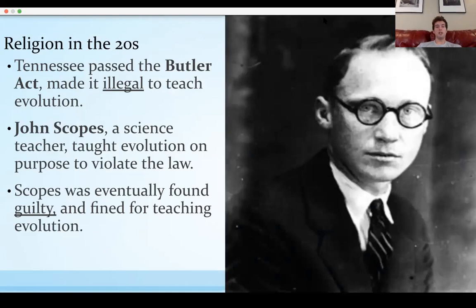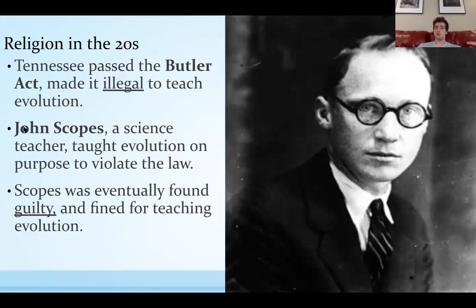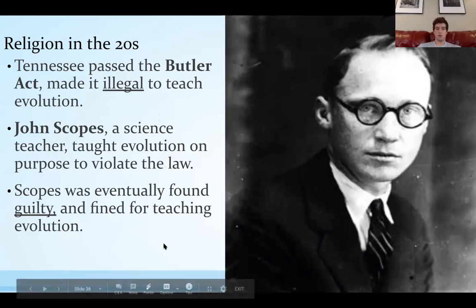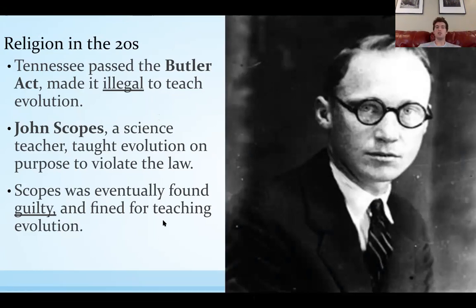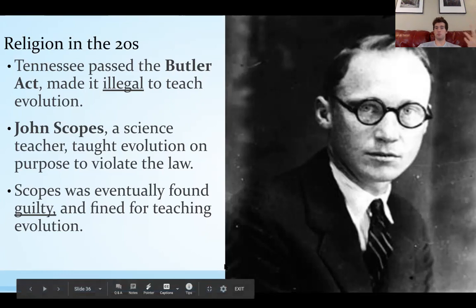There are some things we should talk about regarding religion in the 20s. One big thing was the Butler Act, which made it illegal to teach evolution. Traditionalist values said you can't teach evolution because evolution was a kind of new thing at the time. John Scopes was a science teacher who taught evolution on purpose to violate the law, and he was eventually found guilty and fined for teaching it. That's a pretty famous individual and case, again showing the struggle between modernists — like something like evolution — and traditionalists who say everything in the Bible is the reason why we're here.